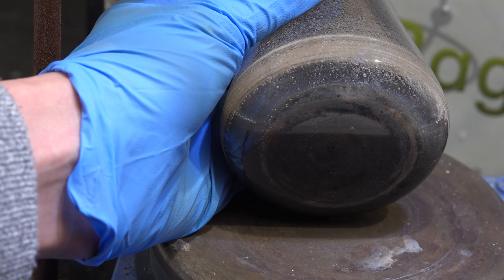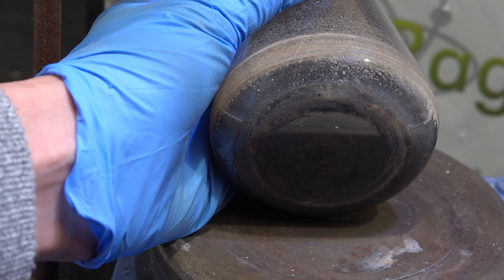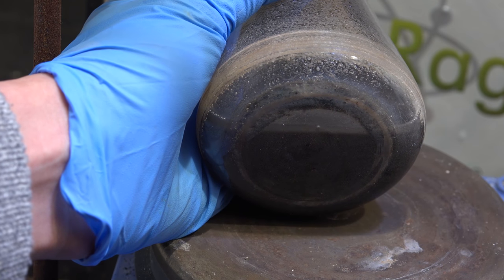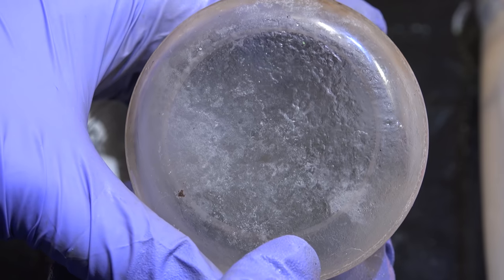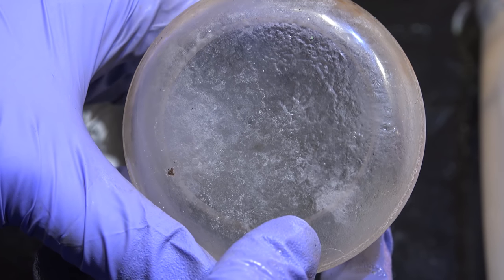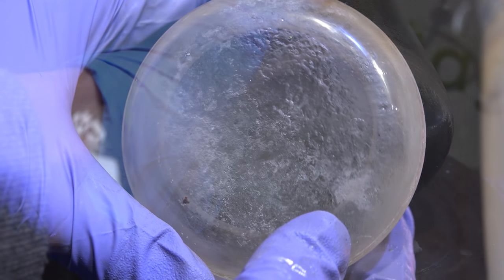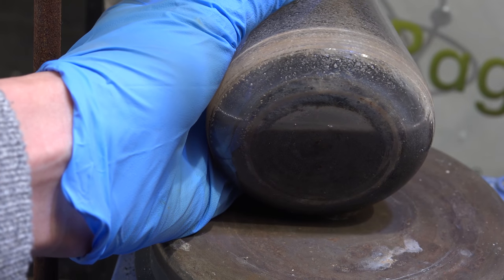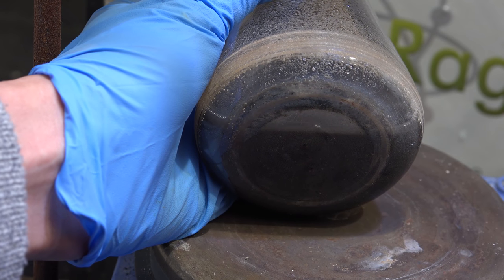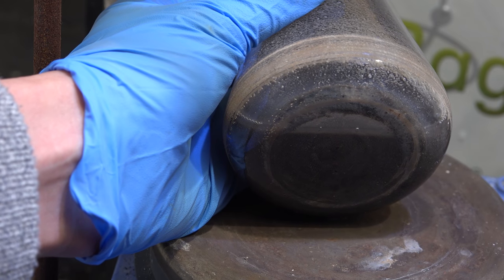But interestingly enough it only happened on just a few spots while the rest of the flask was fine. This was a huge improvement over the previous reactions where the entire bottom surface of the flask was destroyed. I think these are hot spots where the flask contacts the hot plate and is thus hot enough to start the reaction between glass and sodium hydroxide.